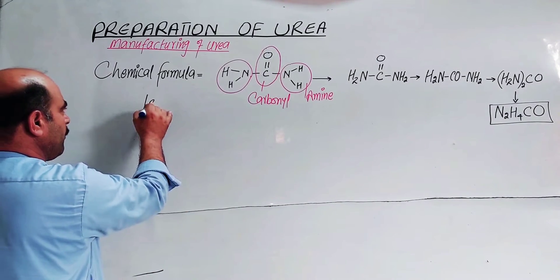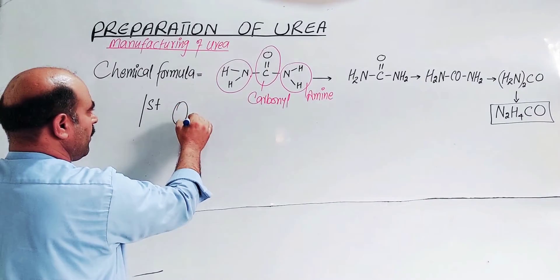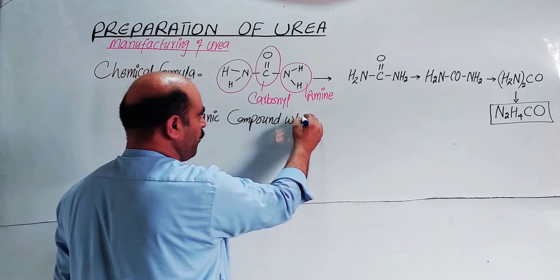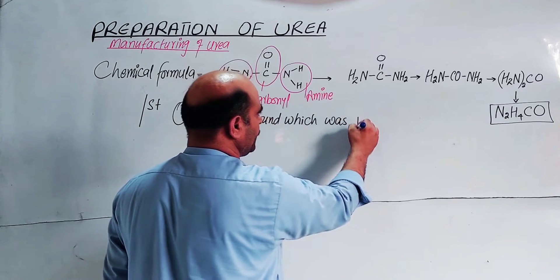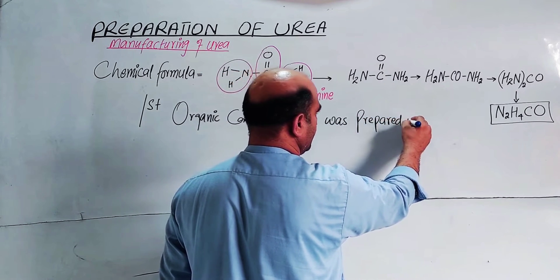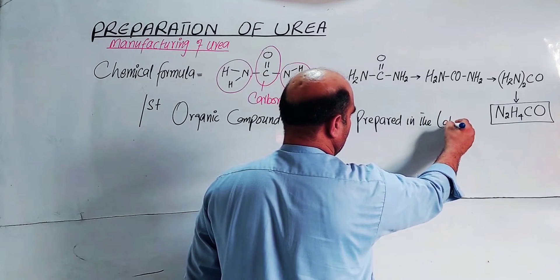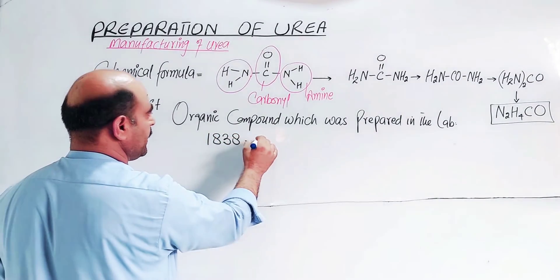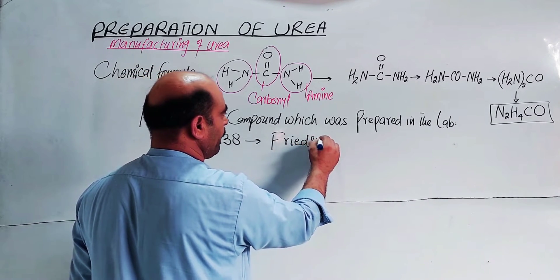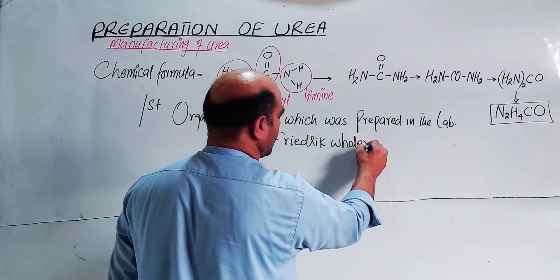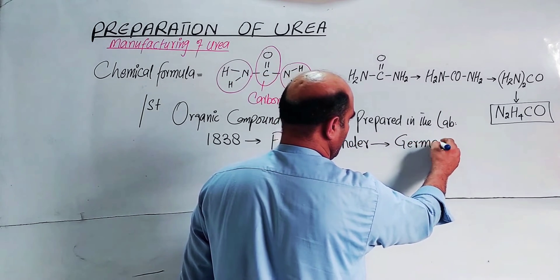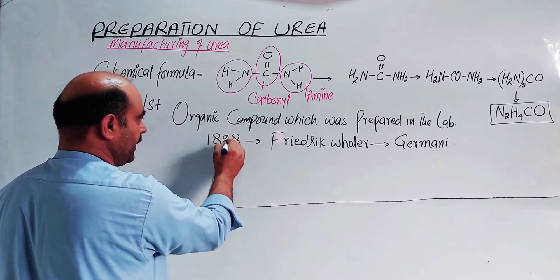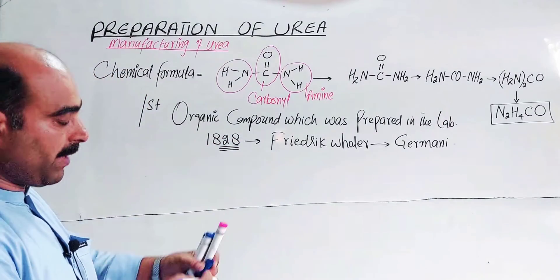Urea was the first organic compound which was prepared — synthesized — in the laboratory. It was the first organic compound prepared in the laboratory. The scientist who prepared it was Friedrich Wöhler, a German scientist, who for the first time prepared this organic compound in 1828.